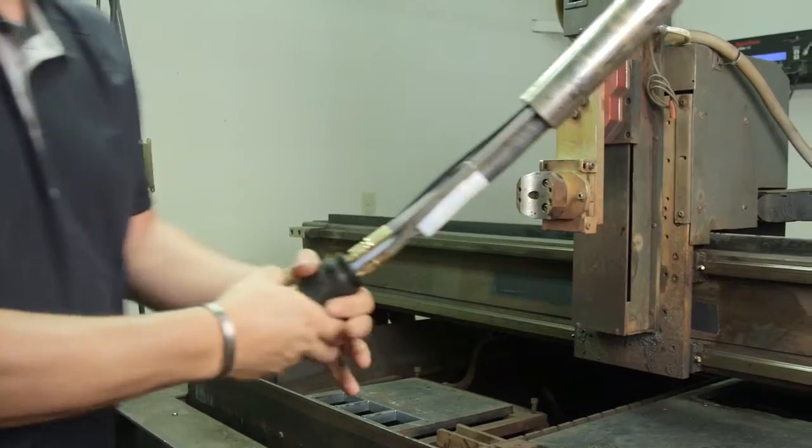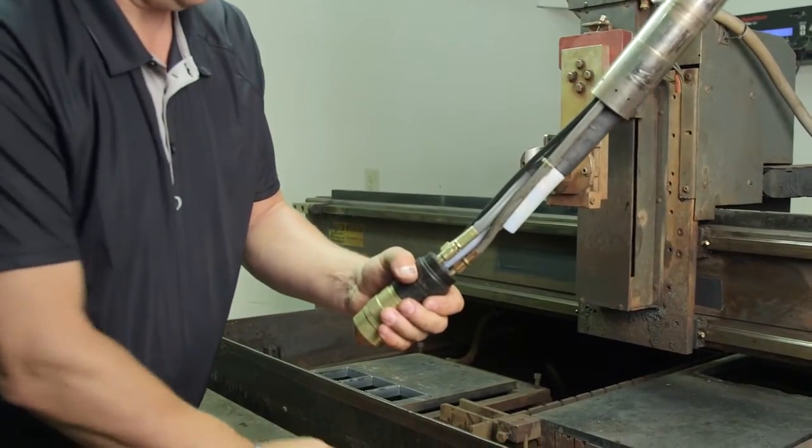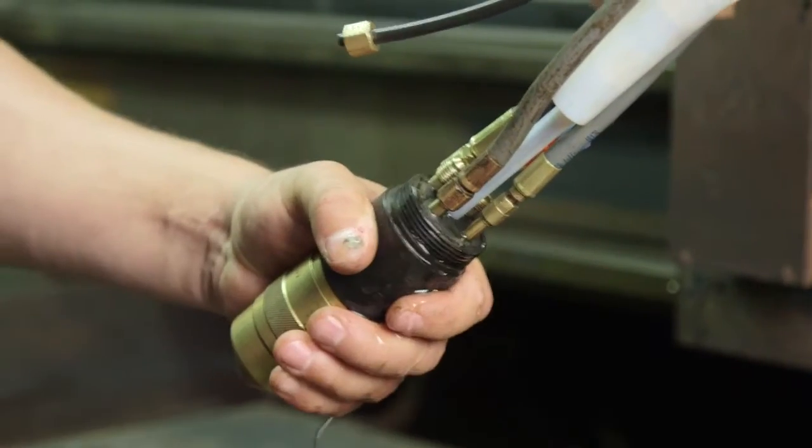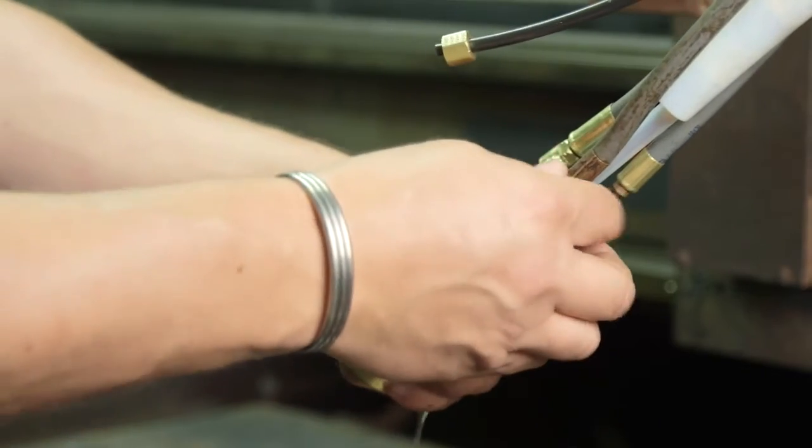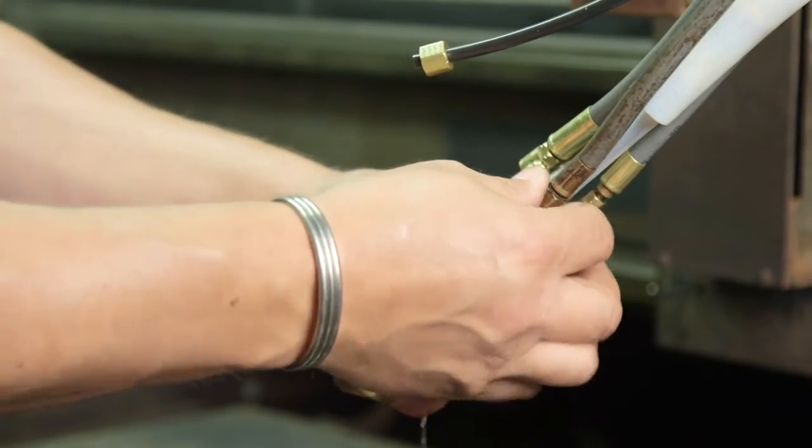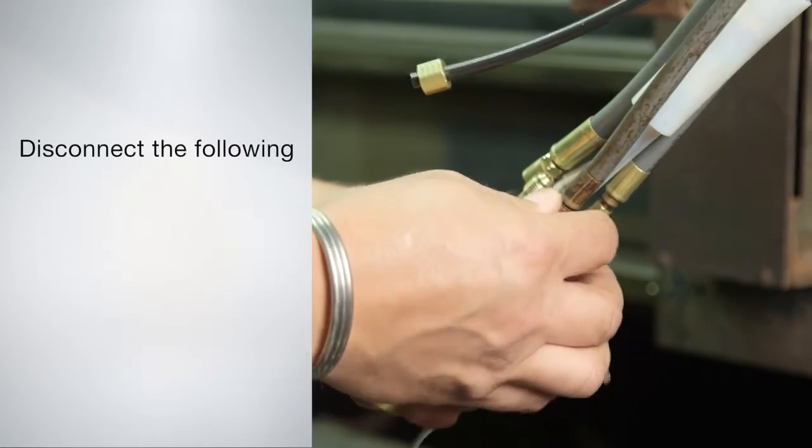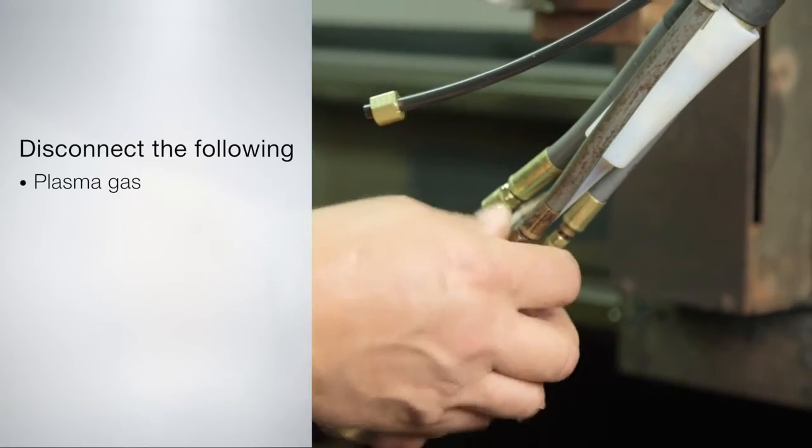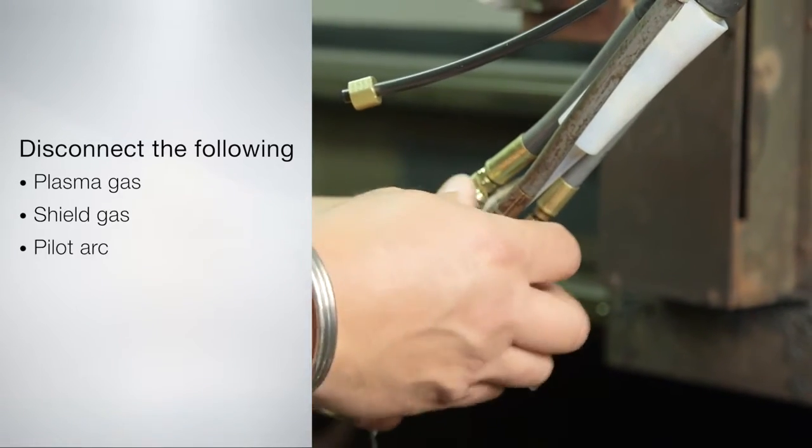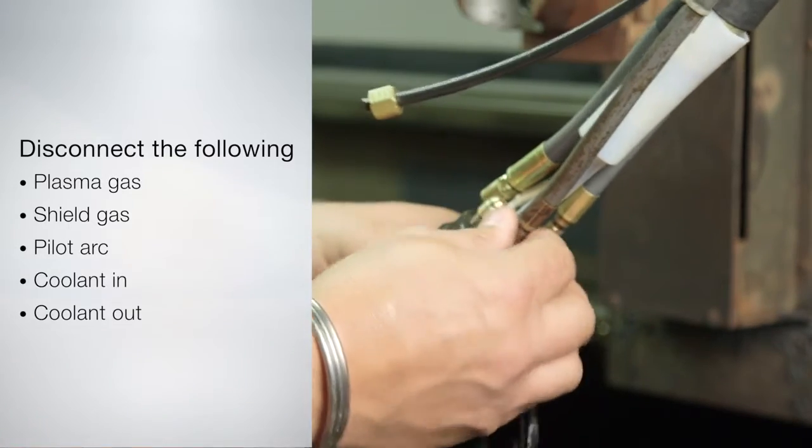Slide the mounting tube out of the way to reveal the lead connections. Disconnect the following five connections from the back of the torch. Two wrenches may be needed to disconnect some fittings: plasma gas, shield gas, pilot arc, coolant in, coolant out.